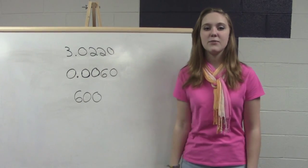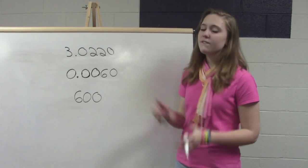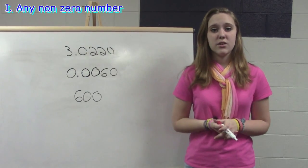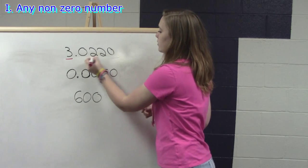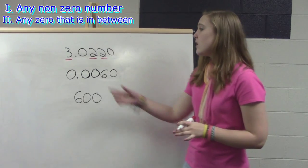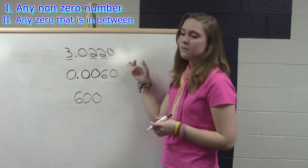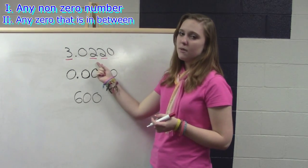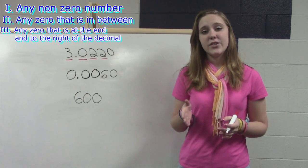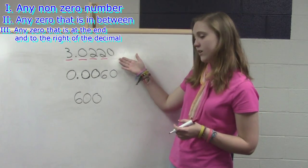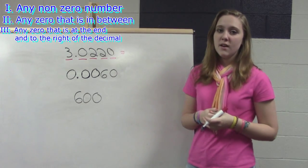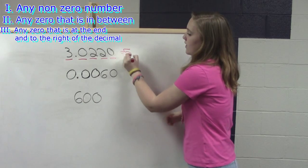Now we're going to study three numbers and see how many sig figs they have. Looking at our first number, we follow our three rules. Rule one — any non-zero digit: we have a three, a two, and a two, all non-zeros. Rule two — any zero in between two sig figs: we have two zeros, and one of them is in between two significant numbers, so that zero is also significant. Rule three — any zero at the end and to the right of the decimal point: that zero qualifies, so it is significant too. This first number has five sig figs.